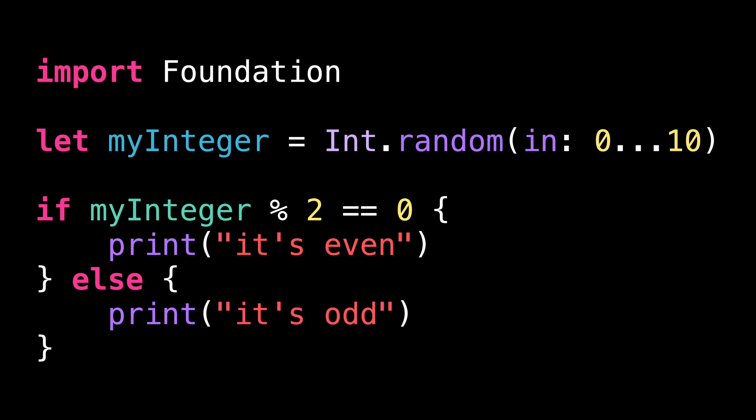However, you can notice that the way the test is written feels very low level. We are using the modulo operator to get the remainder of the integer divided by 2, and then we test whether that remainder is equal to 0.